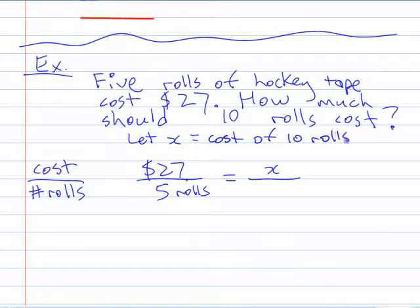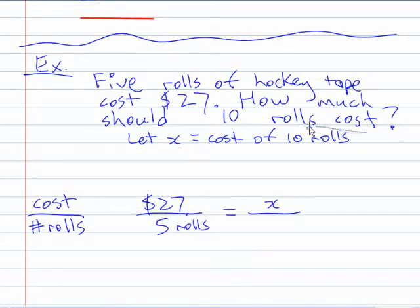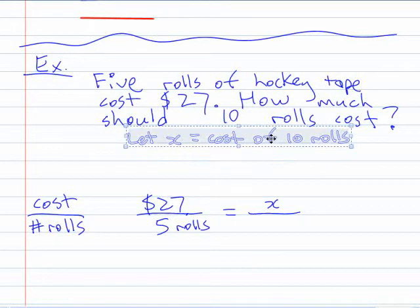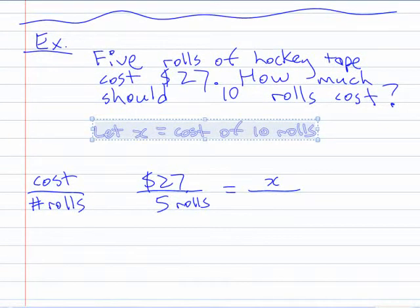Now, I'm getting mixed up here. I'm jamming it all together, so I should spread this out nicely. If you're going to use a variable, you should say what the variable is. And on the bottom, then I can put 10 rolls.